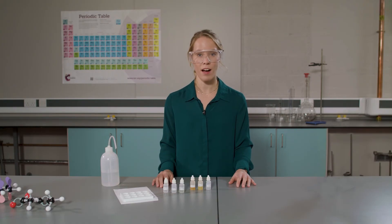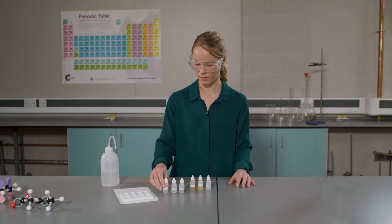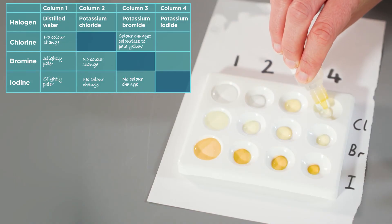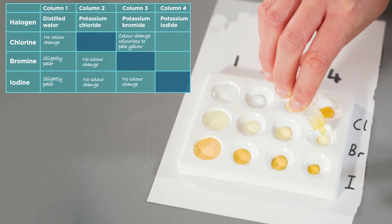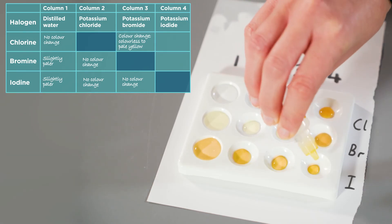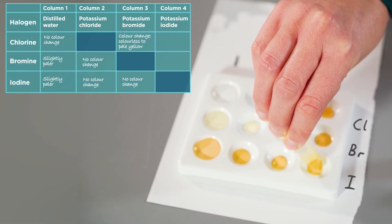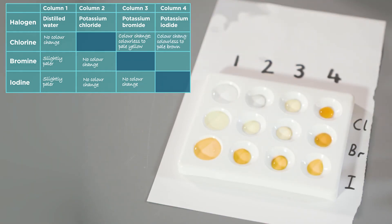Finally, I will add potassium iodide to the fourth column. Carefully observe and note down any changes.